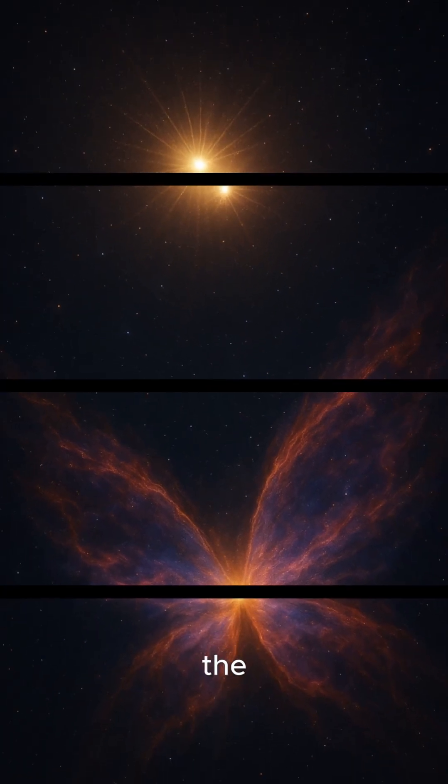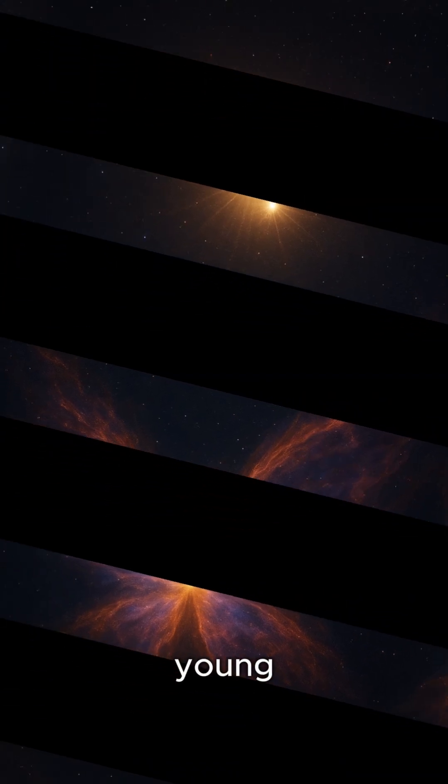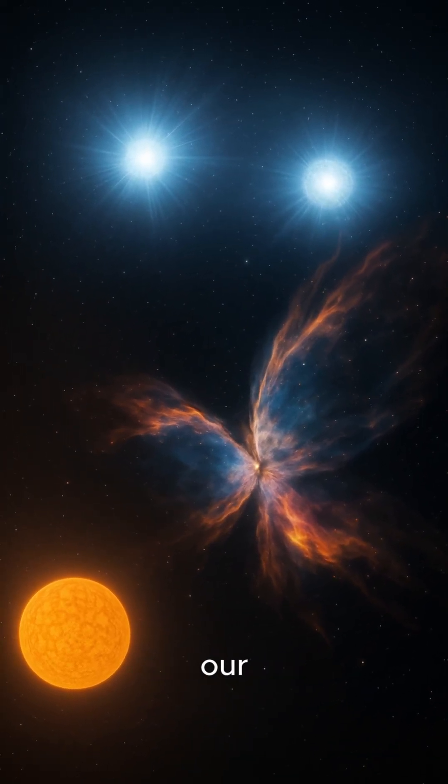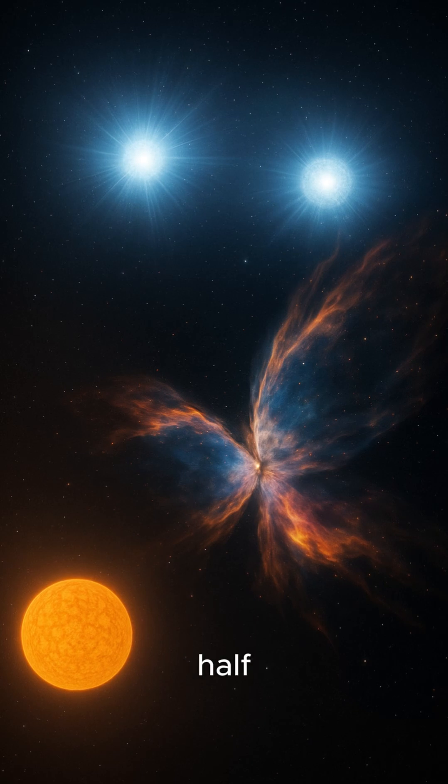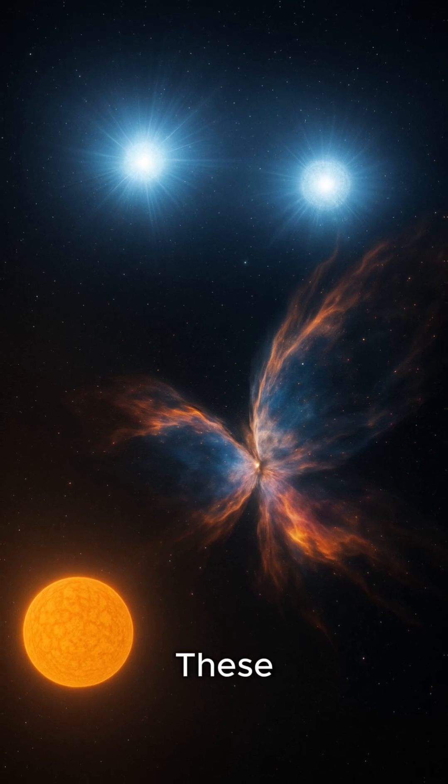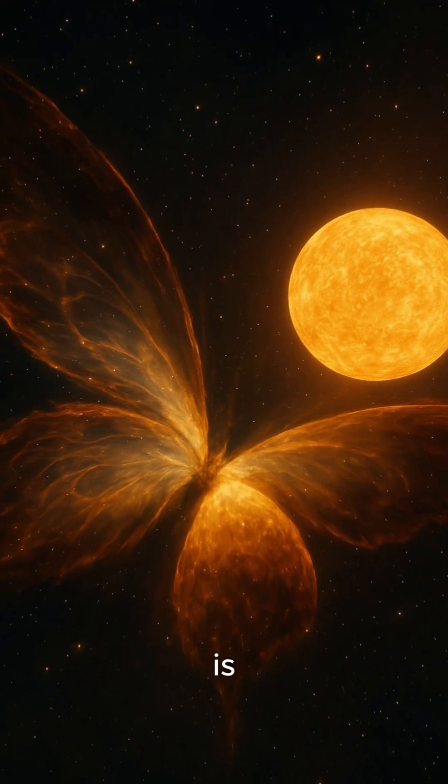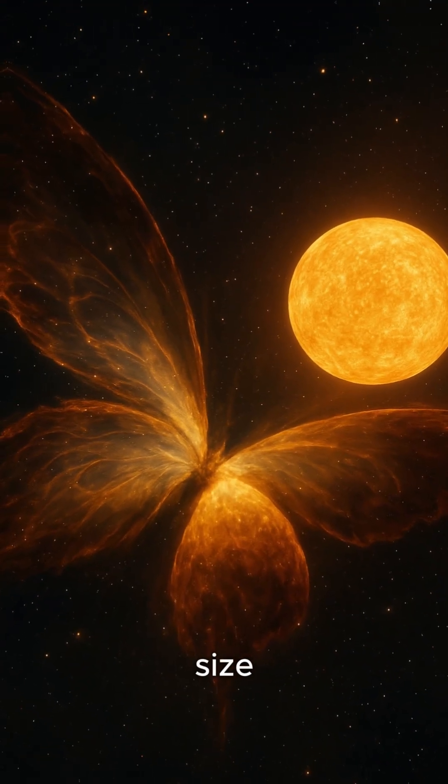The two stars at the center of the nebula are actually quite young. They're only about 10 million years old. In comparison, our sun is about 4.5 billion years old. These stars are also much bigger than our sun. One of them is at least 300 times the size of our star.